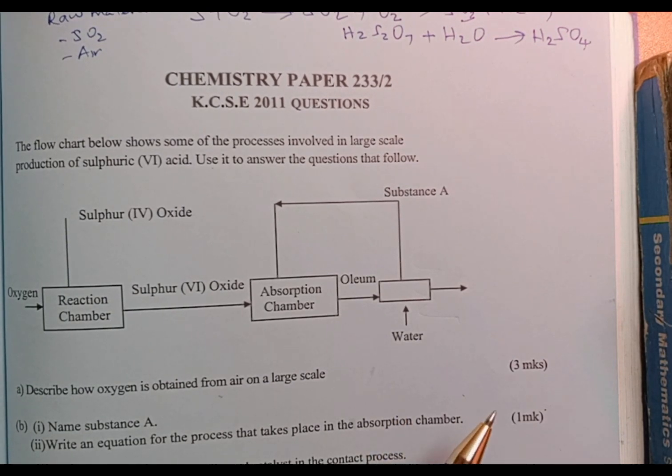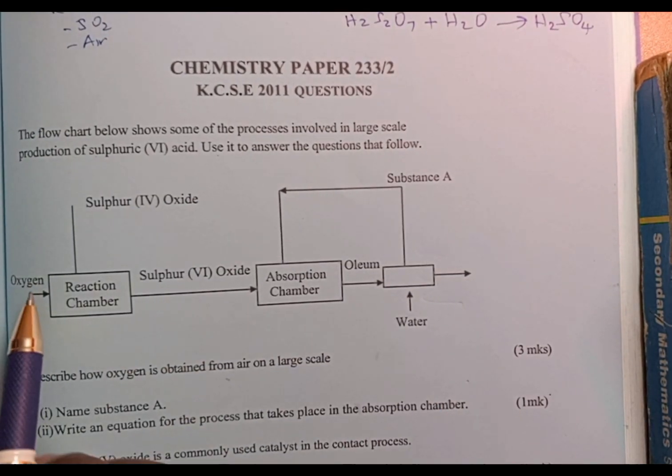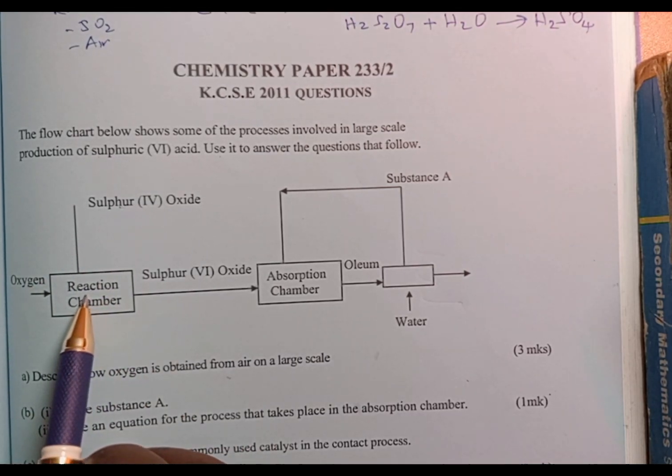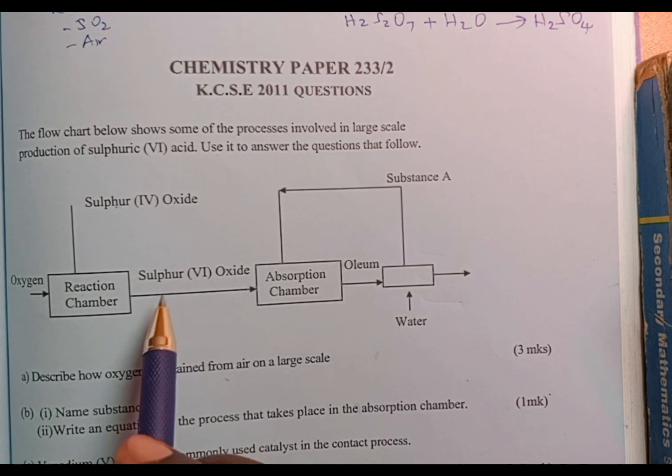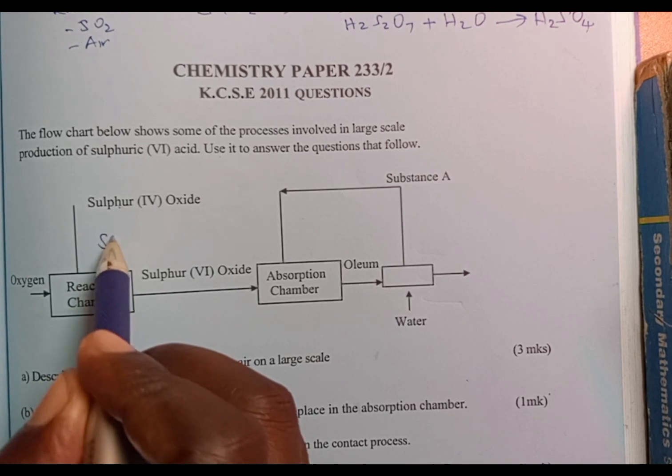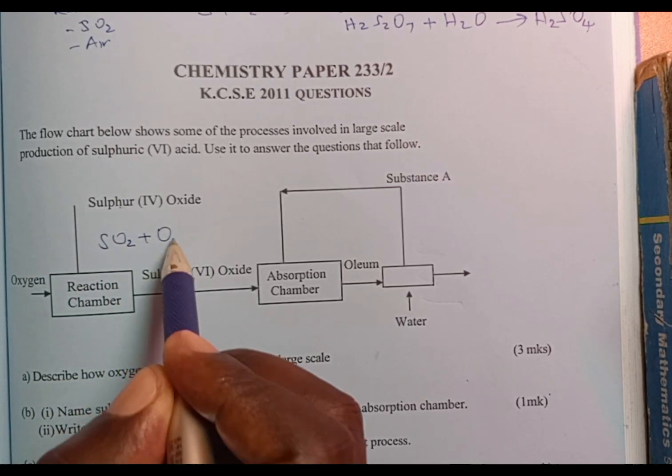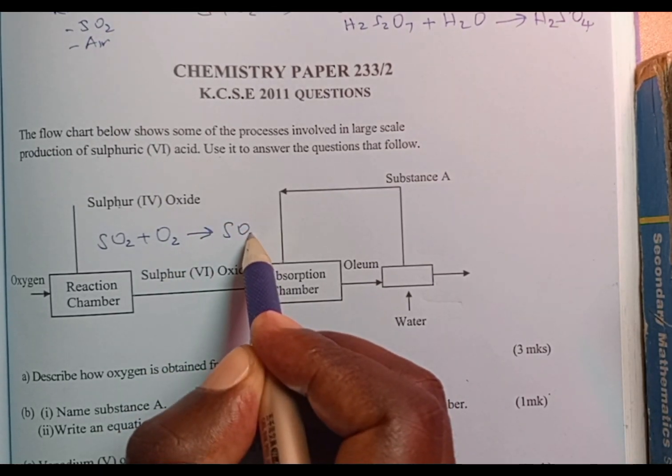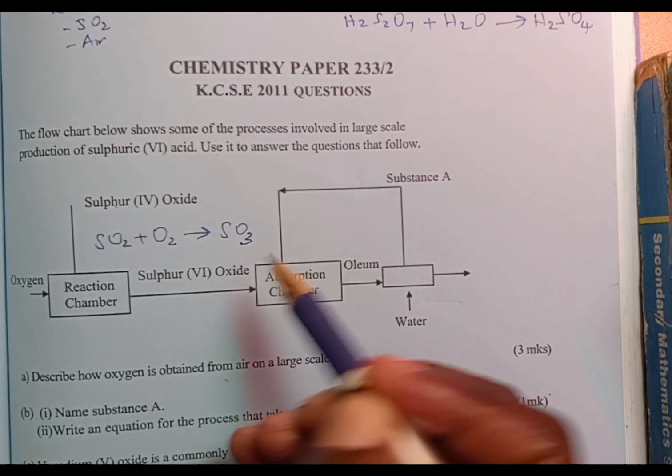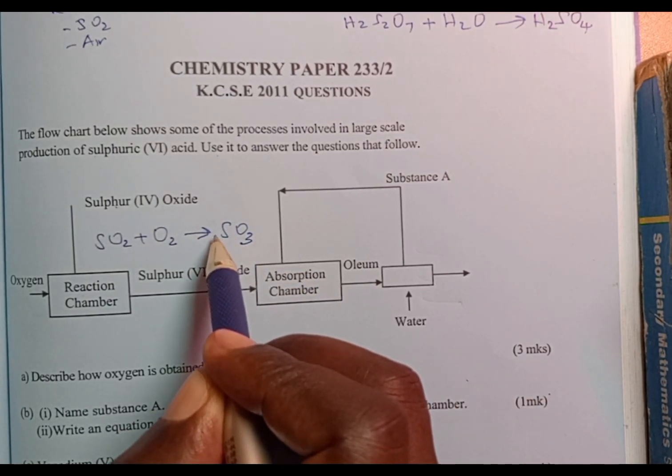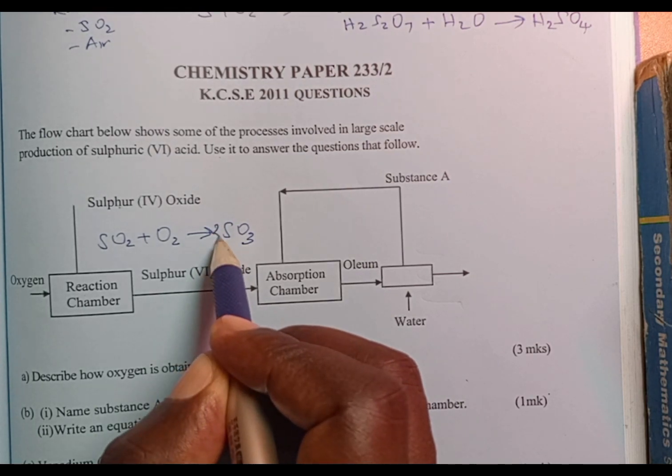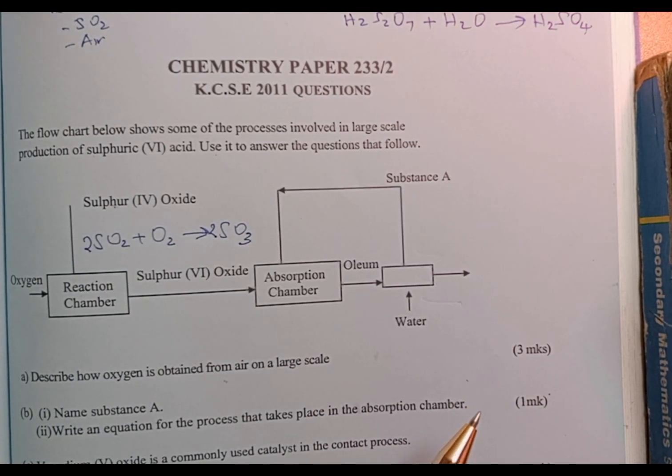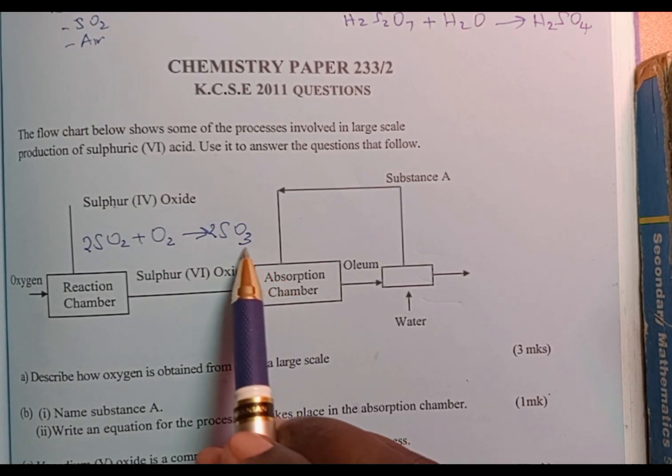So we can now go through the question. We have oxygen and sulfur dioxide coming into the reaction chamber to give us sulfur trioxide. Therefore, the reaction here is going to be sulfur dioxide plus oxygen to give us sulfur trioxide, which is a gas. We can balance the equation by writing 2 behind sulfur trioxide and also 2 behind sulfur dioxide.